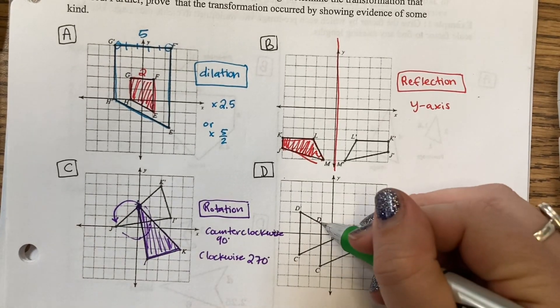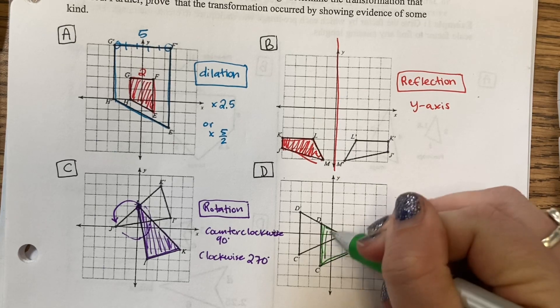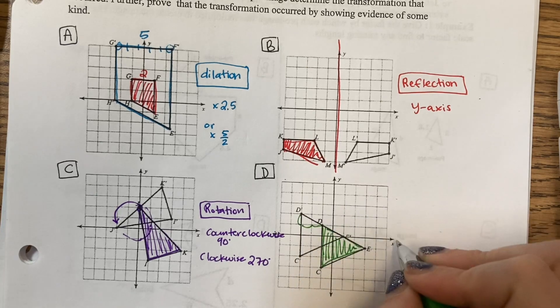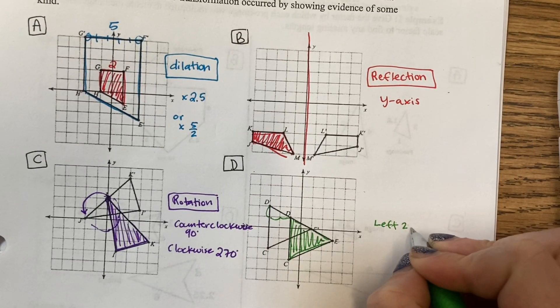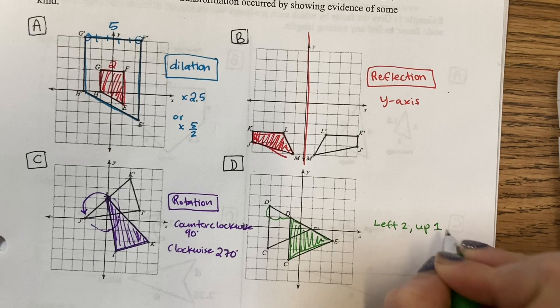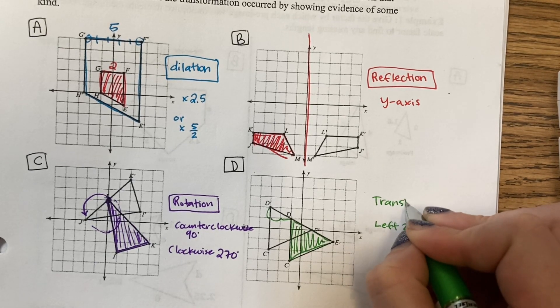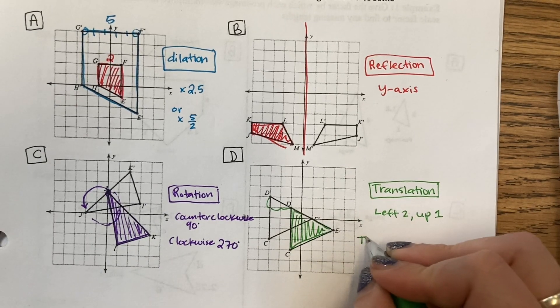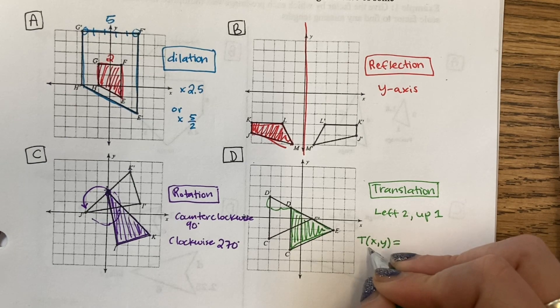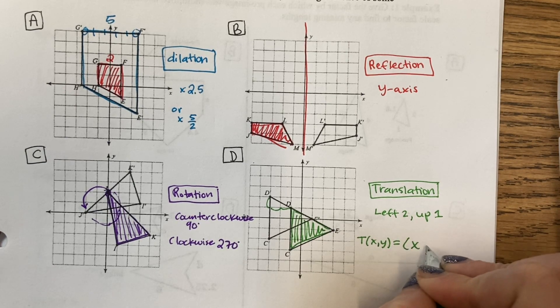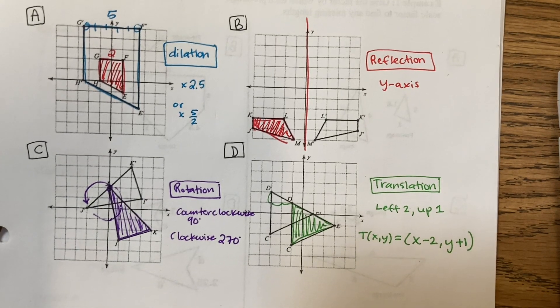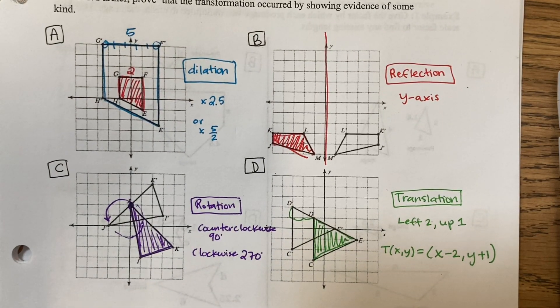D. Here is my original triangle. It was moved left two and up one. That is called a translation. When you write a translation, you would say translation of the original point. X went backwards two and Y went up one. And that is how you do 6A.1. If you have questions, let me know.